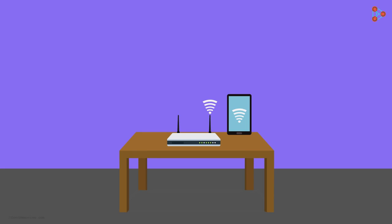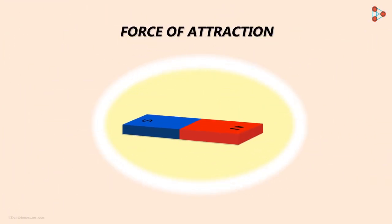One can think of magnets in the same way. A magnet has a magnetic field around it. The strength of this field is greater closer to the magnet and decreases as we go further away from it.